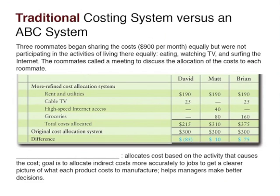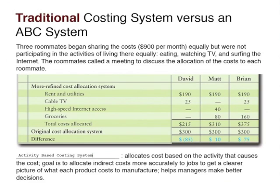This is called an activity based costing system, which allocates cost based on the activity that causes the cost. The goal of activity based costing is to allocate those indirect costs more accurately to our jobs so that we can get a clearer picture of what each product costs to manufacture. This allows our managers to make better decisions for our company.